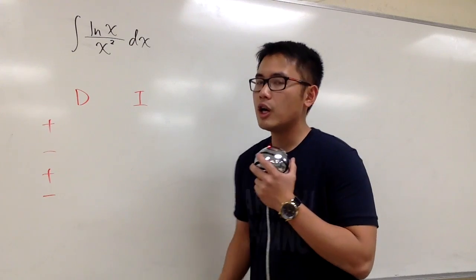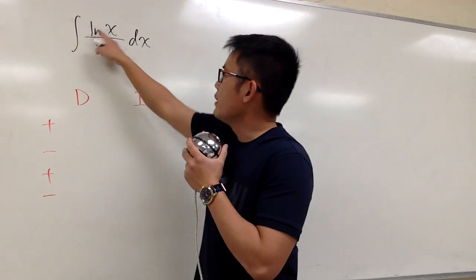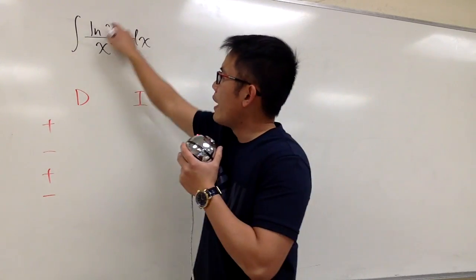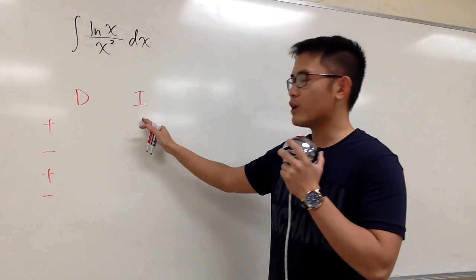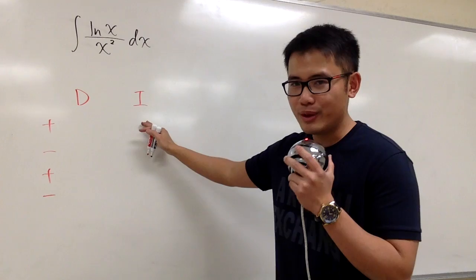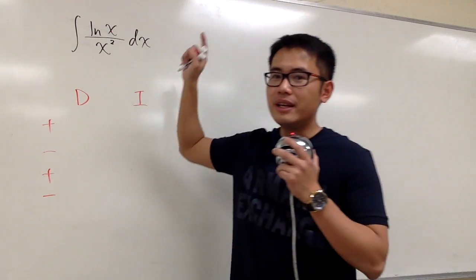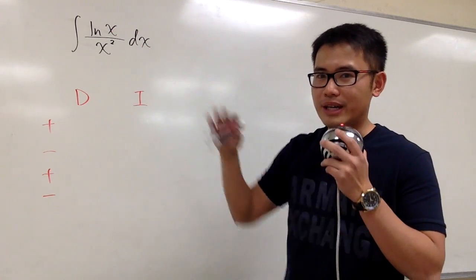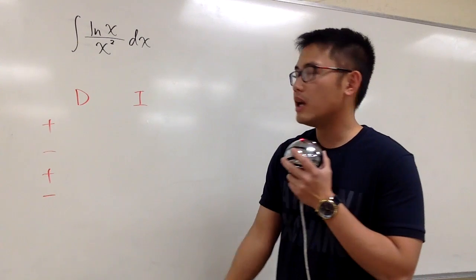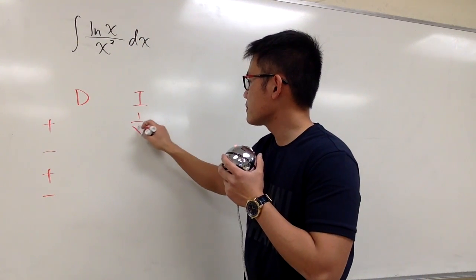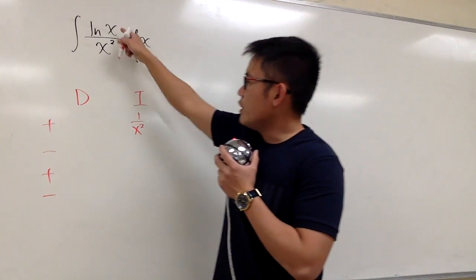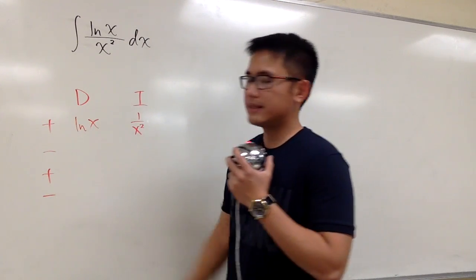This is the setup. We have two functions, the ln(x), and also 1 over x squared. Which one should we pick to be integrated? I don't want to integrate ln(x), because integral of ln(x), we have to use integration by parts for that. Let me integrate 1 over x to the second power, and then I will differentiate ln(x).